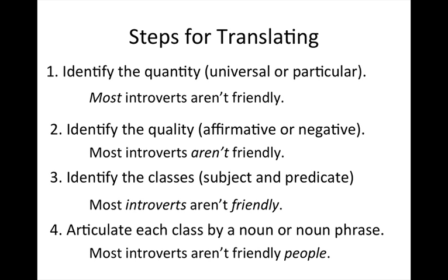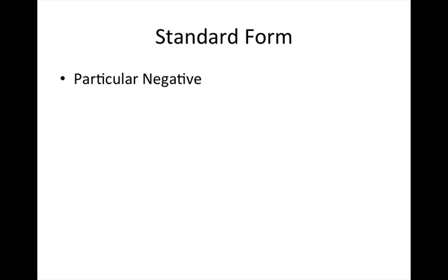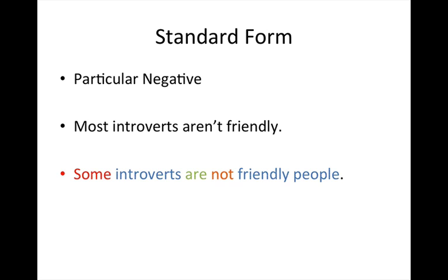So remember, what we want to do when we translate our sentence into standard form is make sure that each of our classes is articulated by a noun or a noun phrase. In this case, then, we have 'most introverts aren't friendly people.' The final formulation for this particular sentence — which is a particular negative — translates from the non-standard form 'most introverts aren't friendly' into standard form: 'Some introverts are not friendly people.'